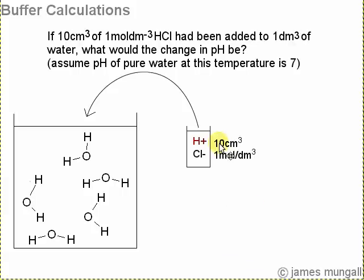So in diagrammatic form, 10 cm³ of 1 mol per decimeter cubed HCl, that's going to go into 1 decimeter cubed of water.